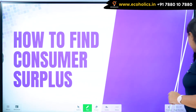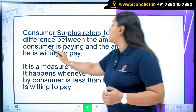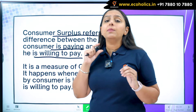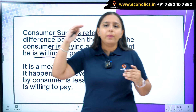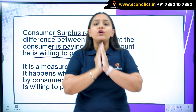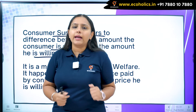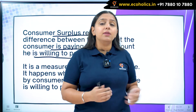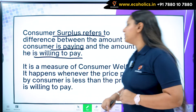Before directly jumping to the method, let us understand what consumer surplus actually is. Consumer surplus refers to the difference between the amount the consumer is paying and the amount he is willing to pay. We have one willingness to pay — the maximum amount I can pay for that good — versus the market price I'm actually paying. If the willingness to pay is greater than the equilibrium market price, I will have some kind of surplus. For example, I was thinking I might have to pay 100 rupees but I'm just paying 60 rupees, so in my own welfare I feel my 40 rupees has been saved.